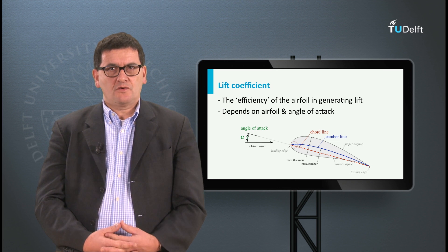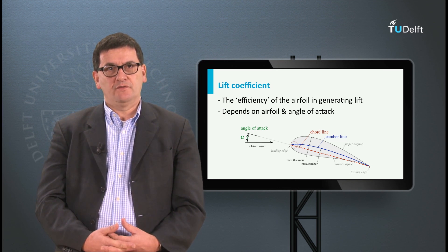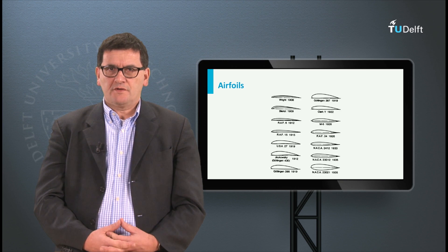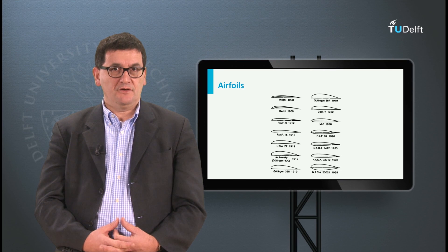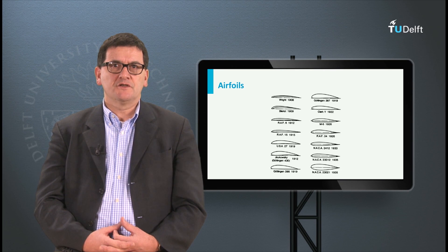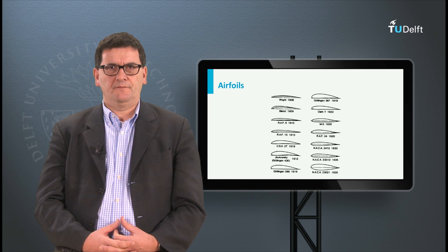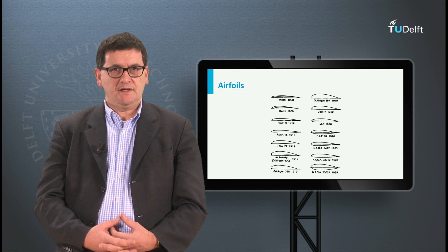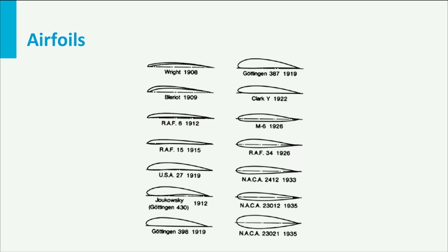This angle is the so-called angle of attack and has a significant influence on the lift. Because of the importance of the airfoil, a lot of experimentation has been done in the early ages of aviation searching for the ultimate airfoil. This resulted in a wide variety of airfoils as can be seen on this slide. What is remarkable is the fact that many airfoils have their own code. Later in the 1920s a more systematic nomenclature was introduced, which is still used today: the NACA profiles.